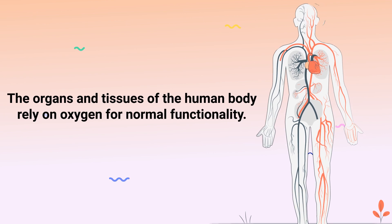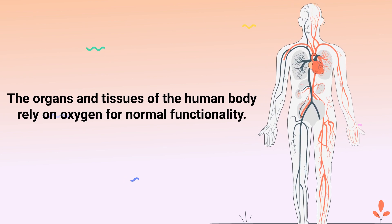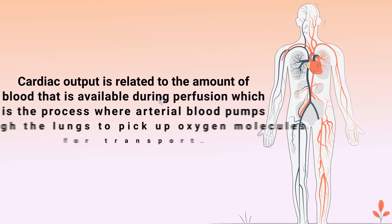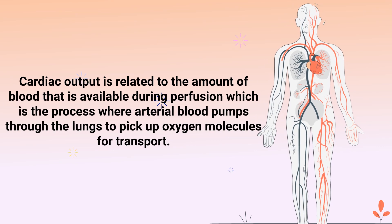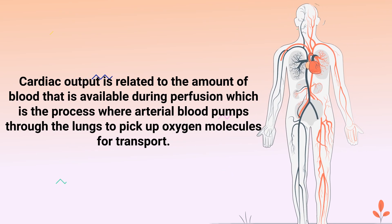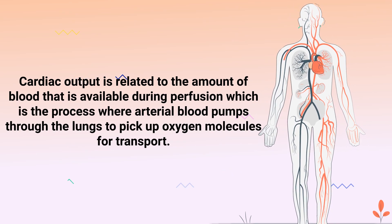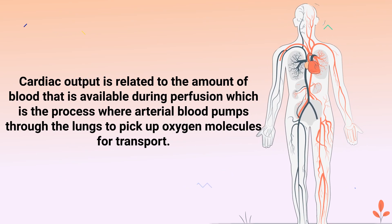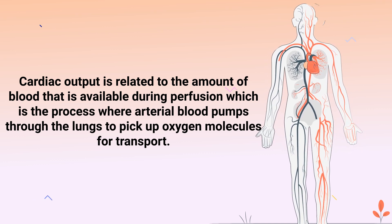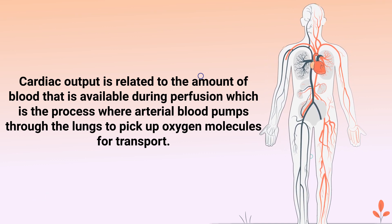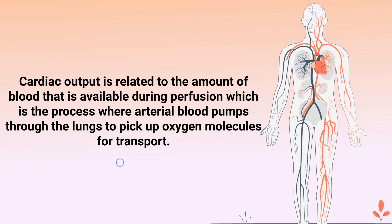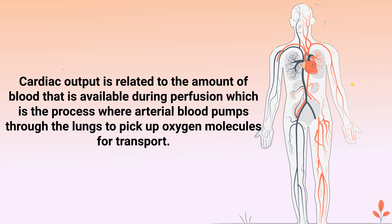The organs and tissues of the human body rely on oxygen for normal functionality. Cardiac output is related to the amount of blood that is available during perfusion, which is the process where arterial blood pumps through the lungs to pick up oxygen molecules for transport.